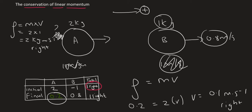So in summary, when two objects crash, the total momentum — which was 1 — has to stay the same. So notice for the final momentum, it stays 1. We were then able to calculate the 0.8, and so obviously object A's momentum should be 0.2.